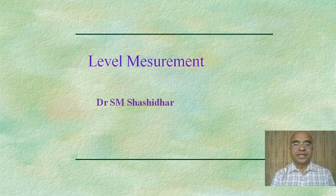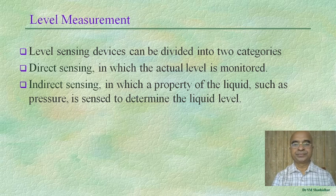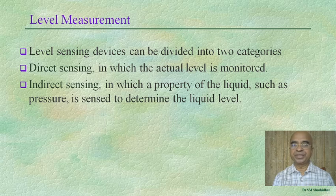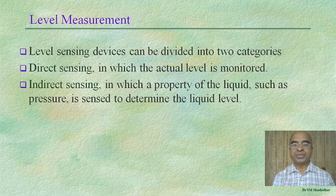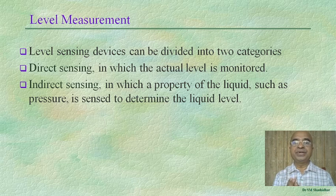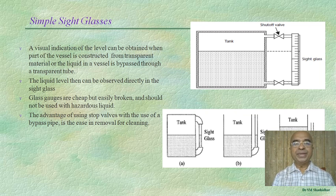We discuss level measurement and liquid level measurement methods. Level sensing devices can be divided broadly into two categories. The first is direct sensing, in which the actual level is monitored. The other is indirect or inferential sensing, in which a property of the liquid such as pressure is sensed to determine the liquid level.